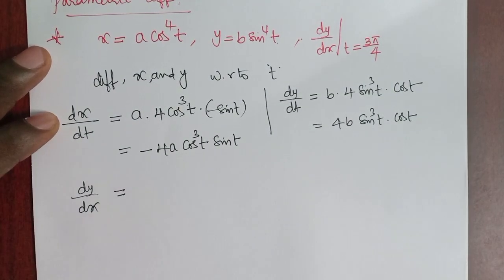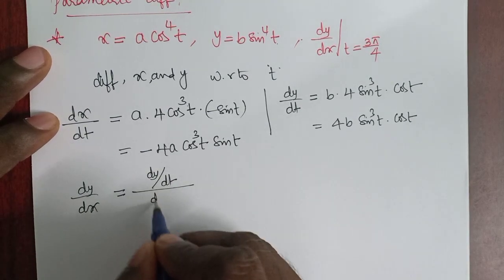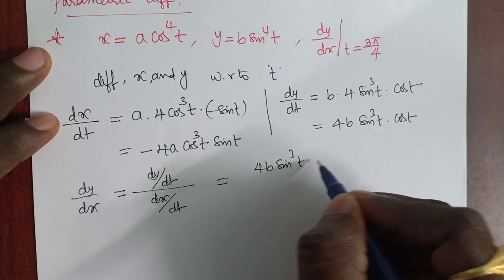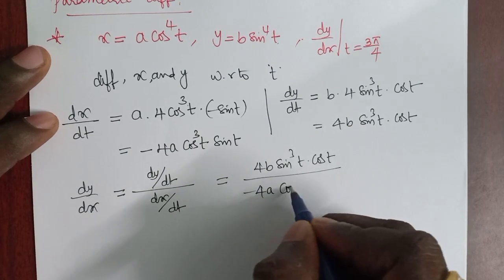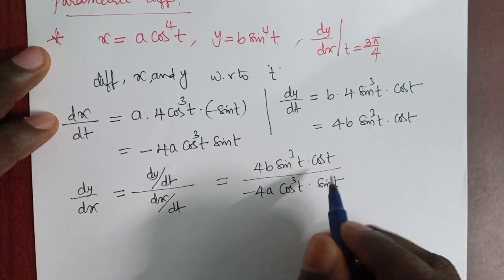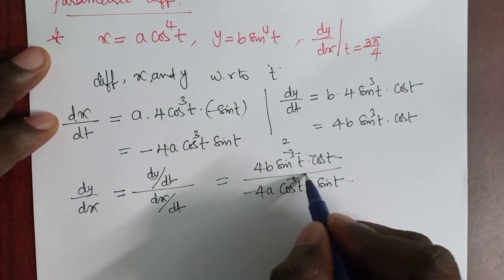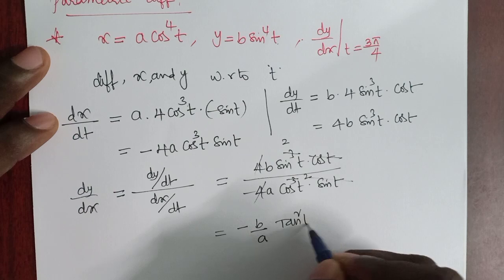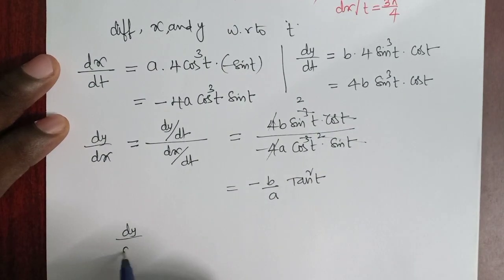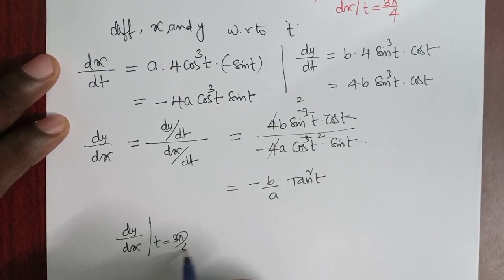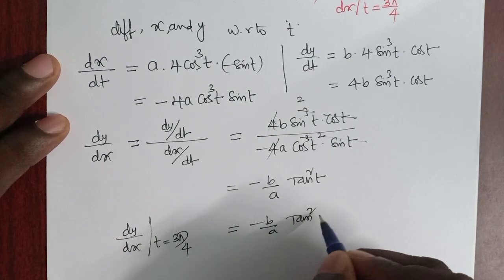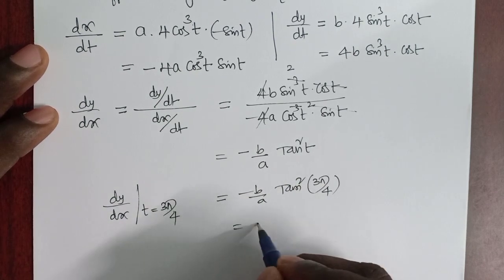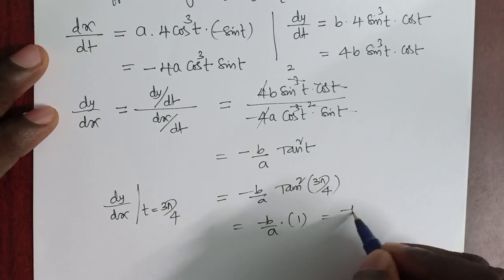So dy/dx = (4b sin³t cos t) / (−4a cos³t sin t). The 4s cancel, giving −(b/a) · sin²t/cos²t = −(b/a) tan²t. Evaluating at t = 3π/4: tan(135°) = −1, so tan²(135°) = 1. Therefore dy/dx = −b/a.